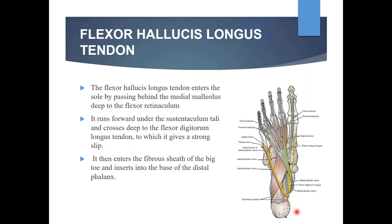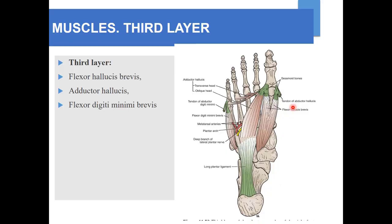The flexor hallucis longus tendon enters the sole by passing behind the medial malleolus, deep to the flexor retinaculum. It runs forward under the sustentaculum tali of the calcaneum and crosses deep to the flexor digitorum longus tendon, to which it gives a strong slip. It then enters the fibrous flexor sheath of the big toe and inserts into the base of the distal phalanx of the big toe. This concludes the second layer of the sole of foot.